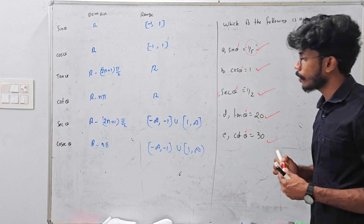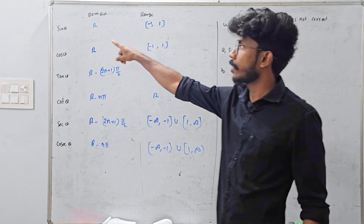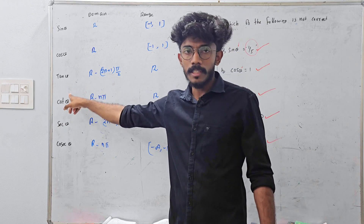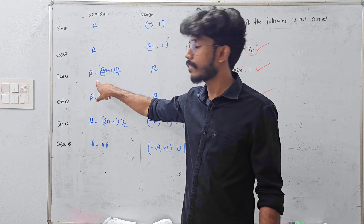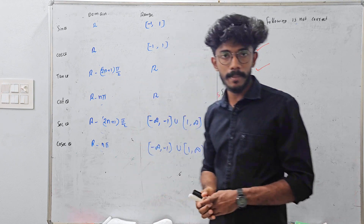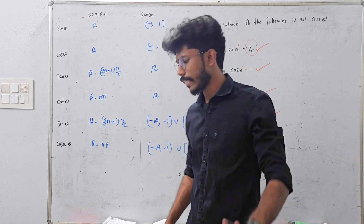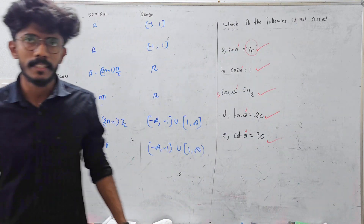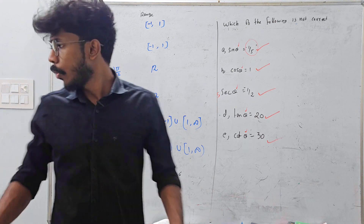We have a range here. If I take a screenshot of this domain range — the function of the domain is real numbers, and the range of sin is minus 1 to 1. The domain of sec excludes odd multiples of pi by 2, i.e., values of the form 2n plus 1 times pi by 2 do not exist in the domain.